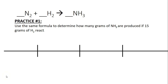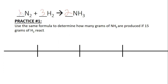We're going to work the first example problem from your notes page: use the same formula to determine how many grams of NH3 are produced if 15 grams of H2 react. Before we can do anything, we always have to make sure our equation is balanced. We can see there are two N's on the left and one N on the right, so we put a 2, which requires a 3 here. I'll write in my 1 even though we normally don't, to help with the mole ratio.